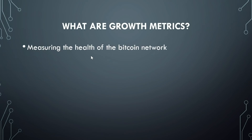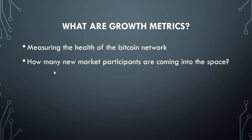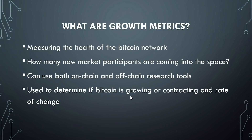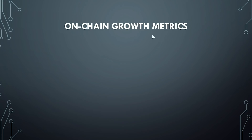Let's start by answering the question: what are the growth metrics that are most valuable when looking at Bitcoin? A 30,000-foot overview of growth metrics is basically measuring the health of the Bitcoin network. We look at things like how many new market participants are coming into the space, and we can use both on-chain and off-chain research tools — on-chain meaning all of the data from the actual transactions happening on the main Bitcoin blockchain. We use these metrics to determine if Bitcoin is either growing or contracting and at what rate of change.